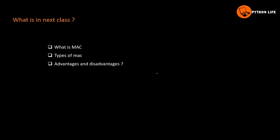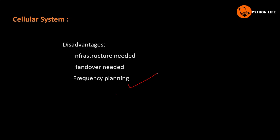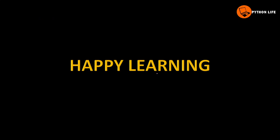This is about cellular systems and infrastructure. In the next class, we will cover MAC, its advantages and disadvantages, and types. Happy learning. Thank you.